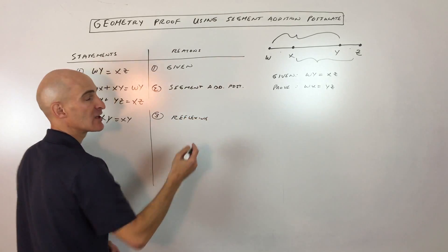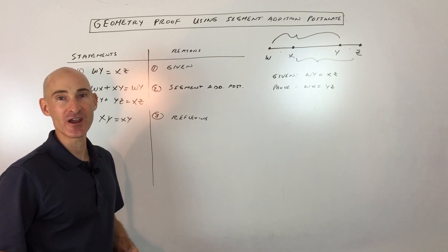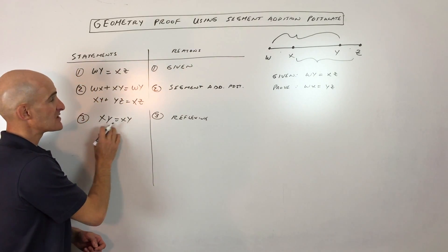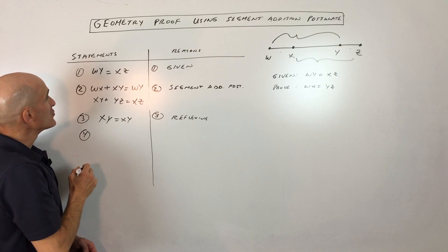Reflexive is like looking in a mirror. You see your reflection. You're the same height in the mirror as you are in real life, right? So that's called the reflexive property. This XY is equal to itself. And you'll see why we're going to use that in a minute.